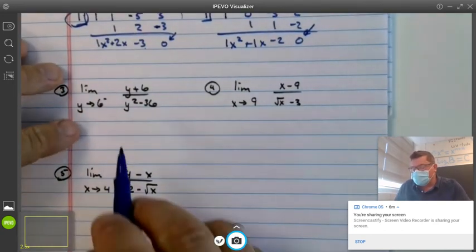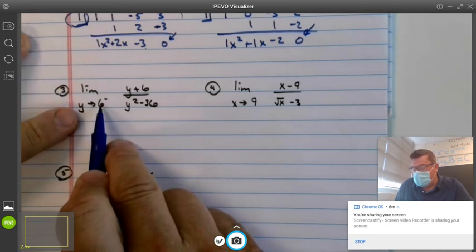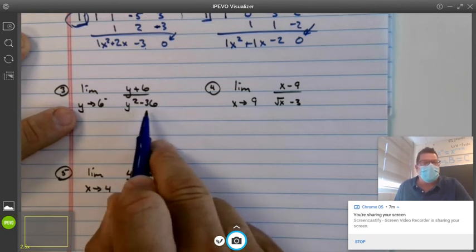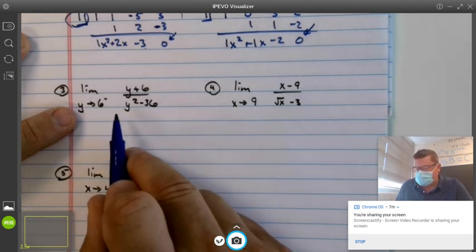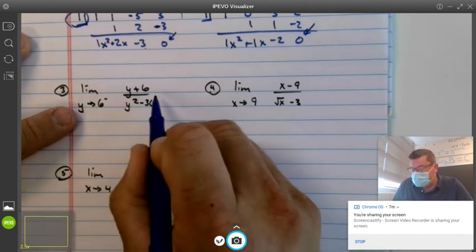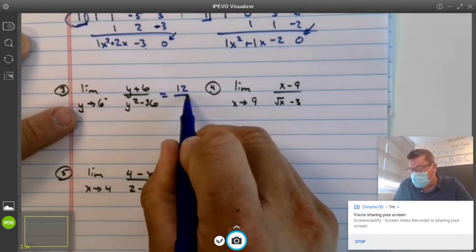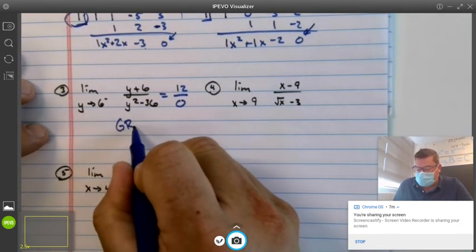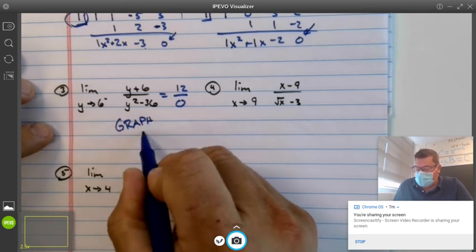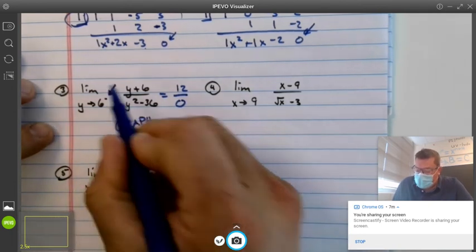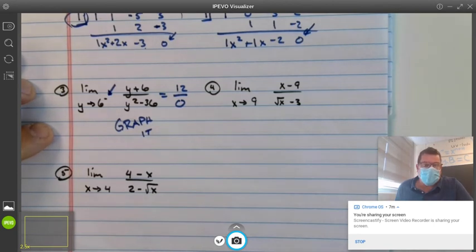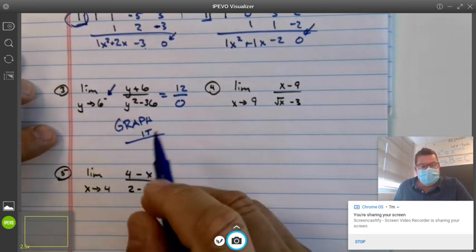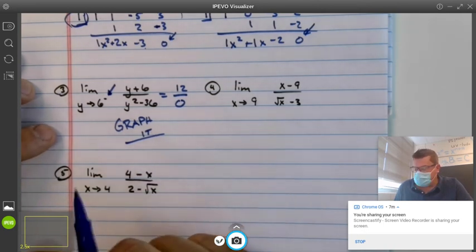Here's a couple more problems and then we'll call it quits for the day. When you plug in 6, oh look, it's the difference of perfect squares. So you think you have to factor it, and not necessarily the case. When you plug in 6, you're going to get 12, but when you plug it in the bottom, you get 0. Remember, on those, you want to graph it and see its behavior as you come from the left-hand side. So graph that, it becomes a problem just like section 1.1.